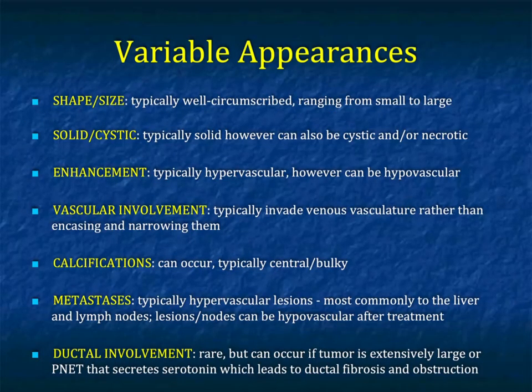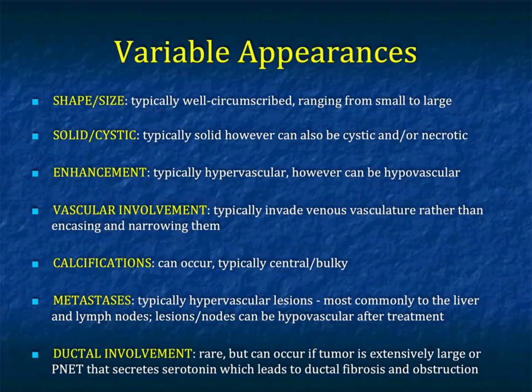When you speak about neuroendocrine tumors, they have a variable appearance. In terms of shape and size, they're typically well-circumscribed, but can be a centimeter or 10 centimeters. They're typically solid; however, they can be purely cystic, or solid and cystic with areas of necrosis. Although typically hypervascular, they can sometimes be mildly hypervascular or even hypovascular.